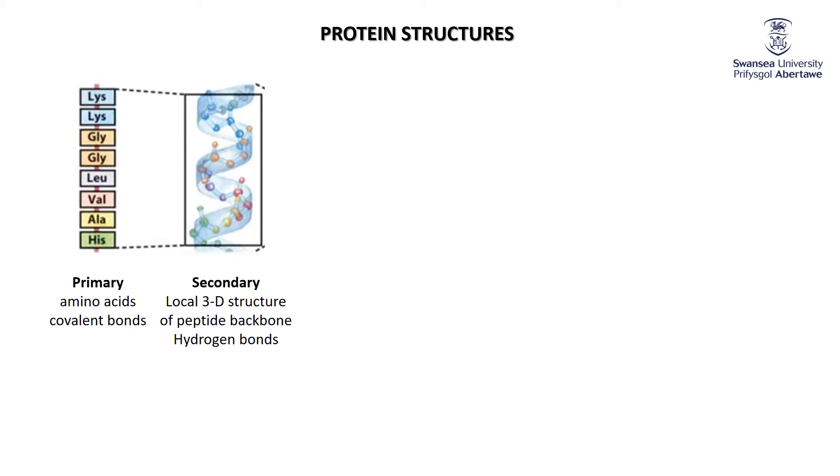So primary structure of a protein is just the order of the amino acids held together by those peptide links, by those covalent bonds.